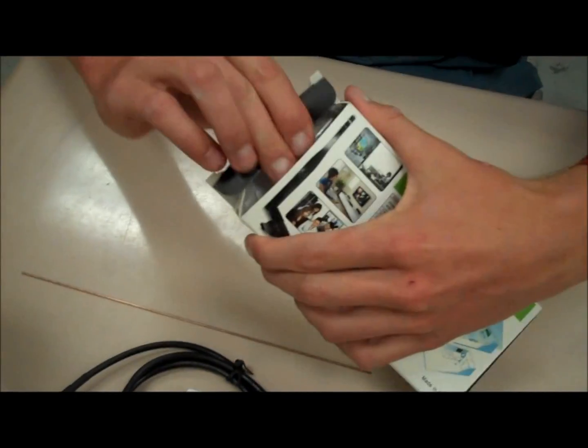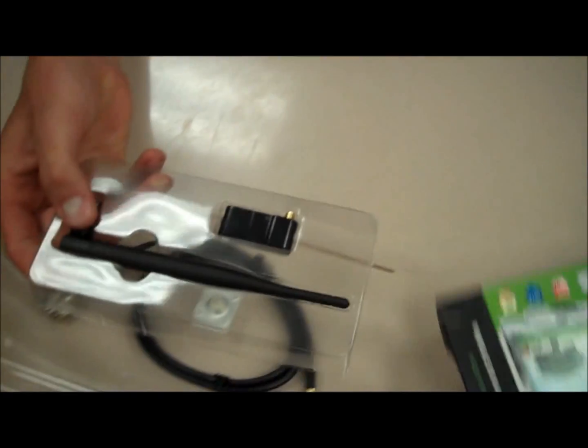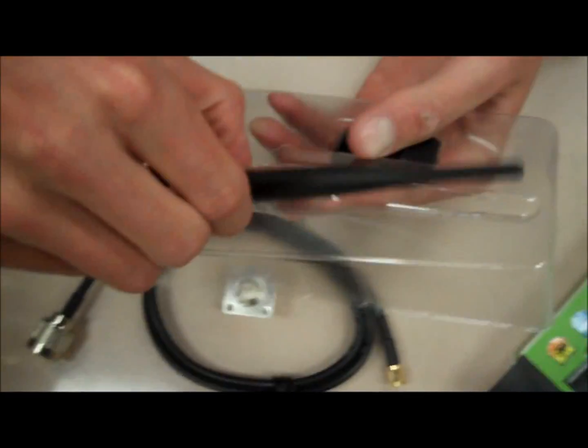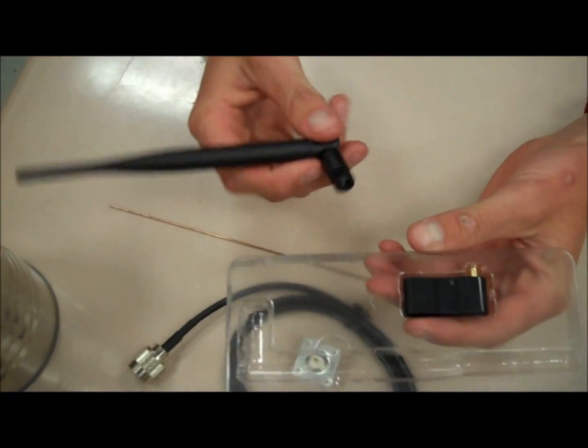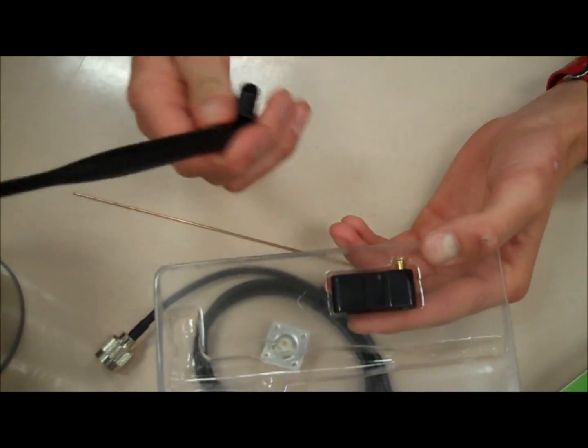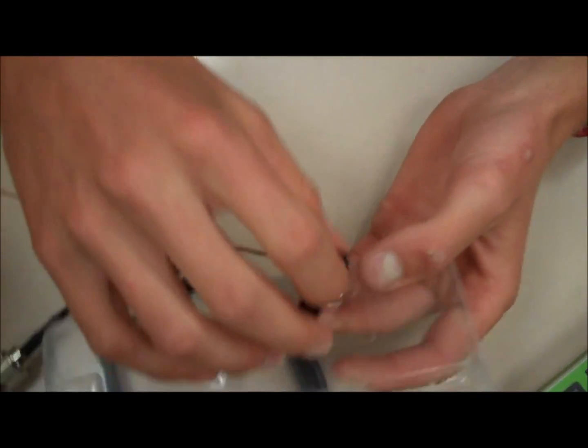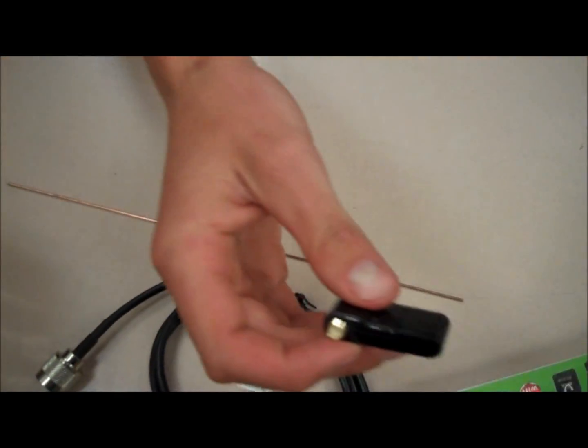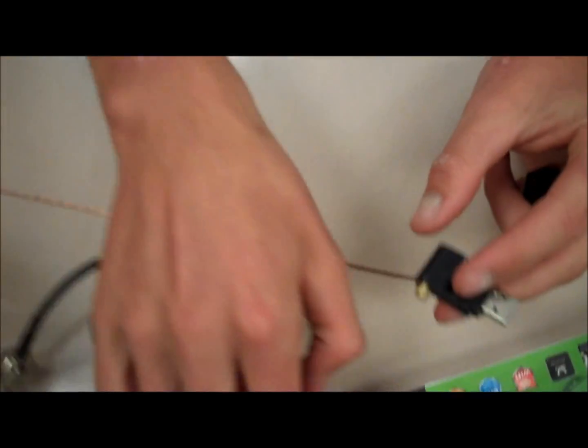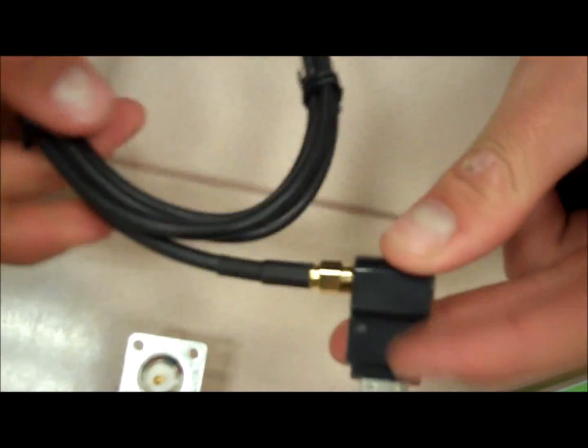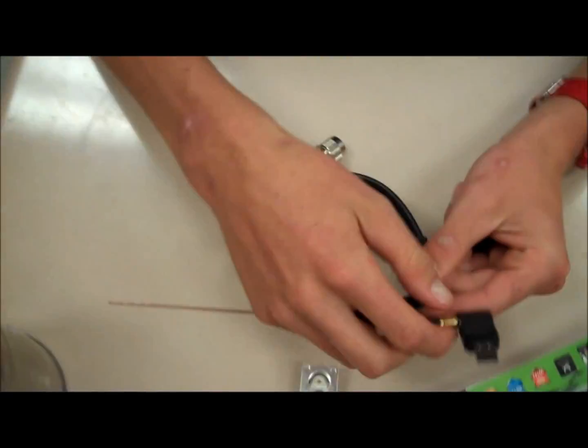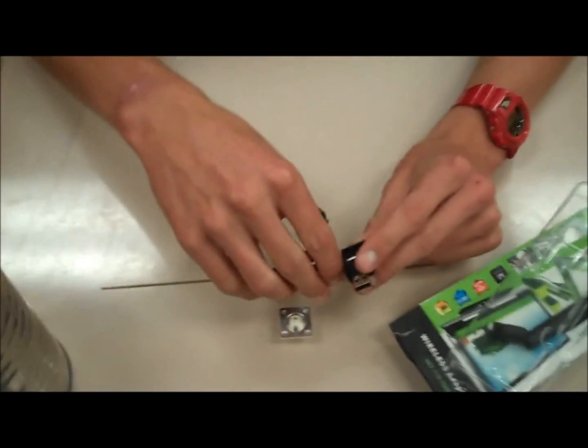The last thing we have is a wireless adapter, a USB wireless adapter. It comes with two parts: the antenna, which we're not going to use because we're using the can as an antenna and it's going to work a lot better than this. Then you have the USB adapter that plugs into your computer, and the other end screws onto the pigtail. Then the pigtail runs to the can, and that's going to give you your wireless connection. That's all the parts you'll need.